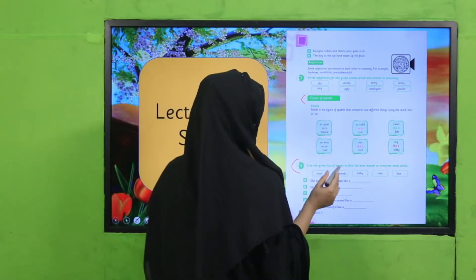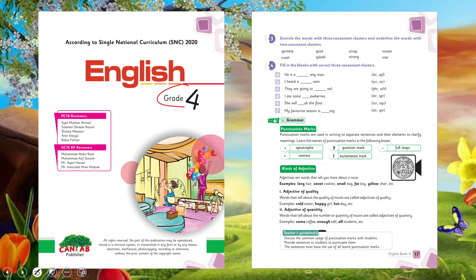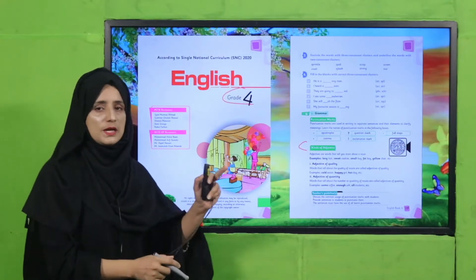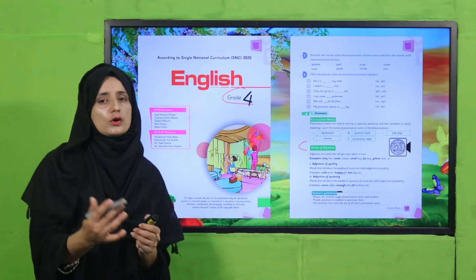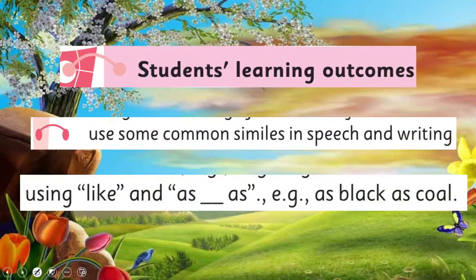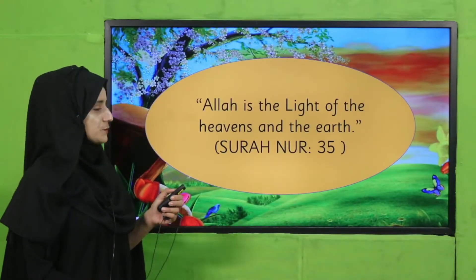Simile is a figure of speech. We will cover question number 8 on page number 86 in English for Grade 4. We have already learned about adjectives, and simile is also related to comparison. Our student learning outcome today is: use some common similes in speech and writing using 'like' and 'as' — for example, 'as black as coal.'